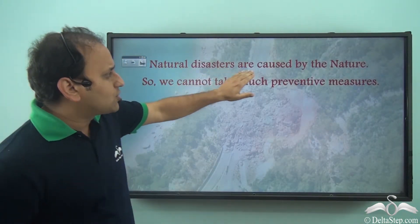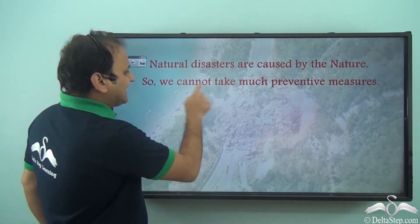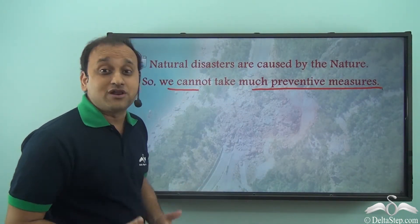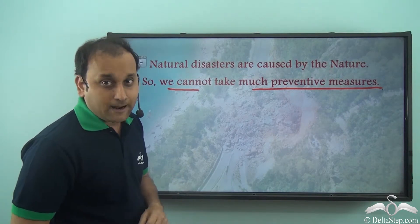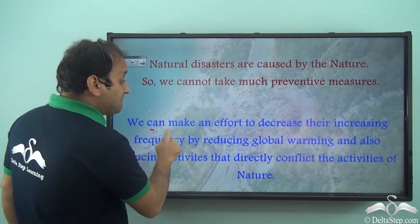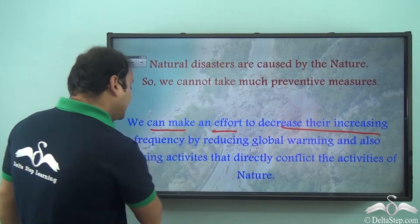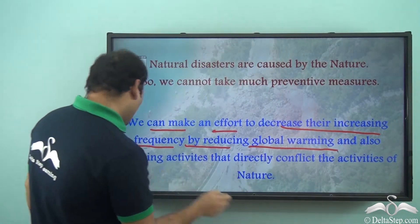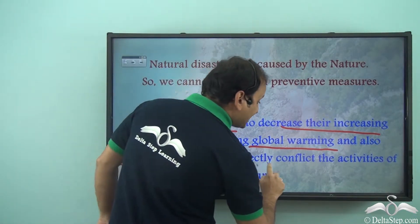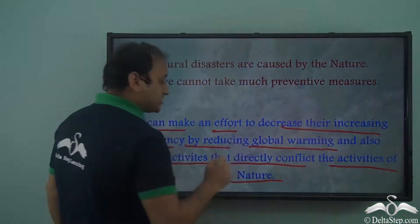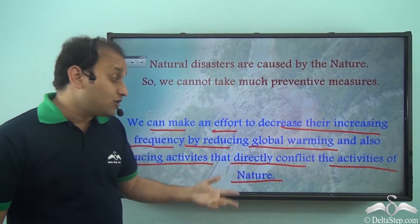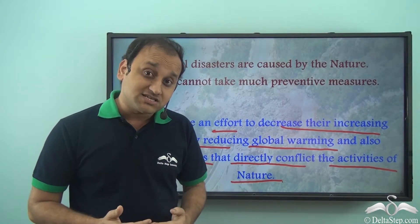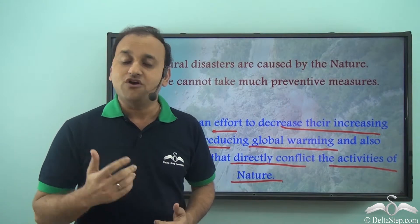Natural disasters are caused by nature, so we cannot take many preventive measures as it is a natural process. But we can make an effort to decrease their increasing frequency by reducing global warming and also reducing activities that directly conflict with the activities of nature. By taking steps to control global warming and reduce activities that hamper natural processes, we can at least reduce the frequency of natural disasters.